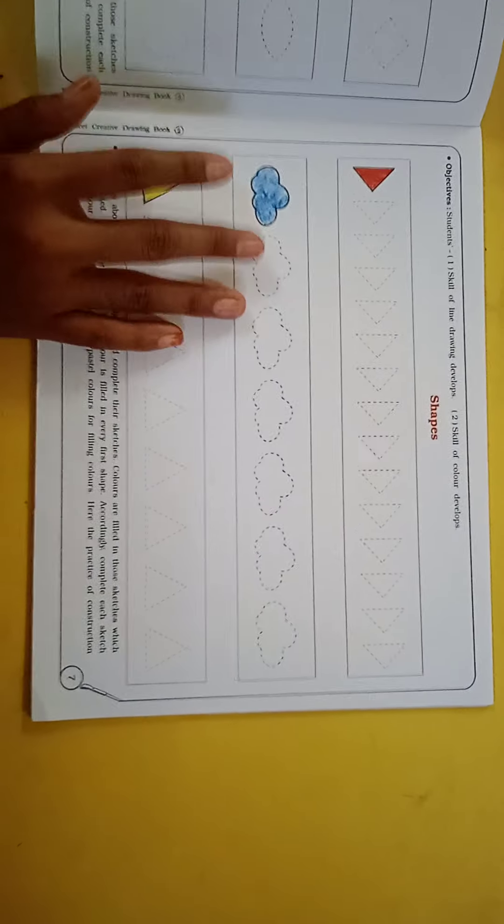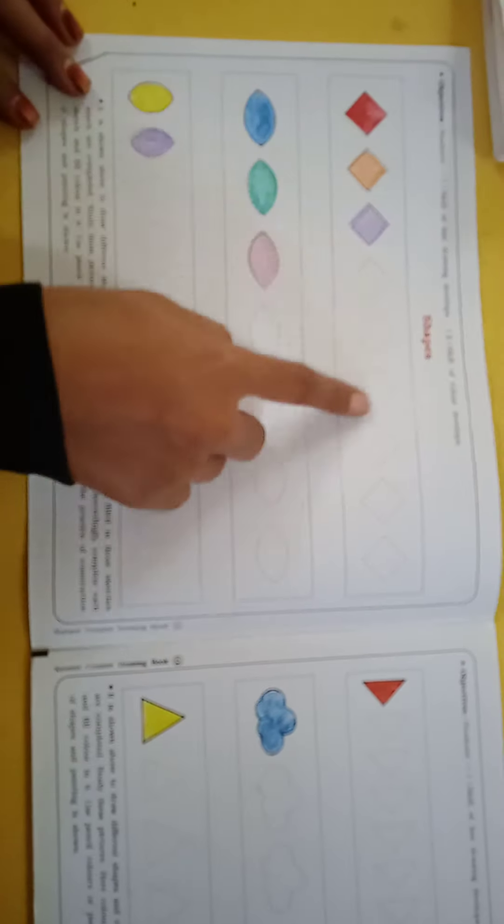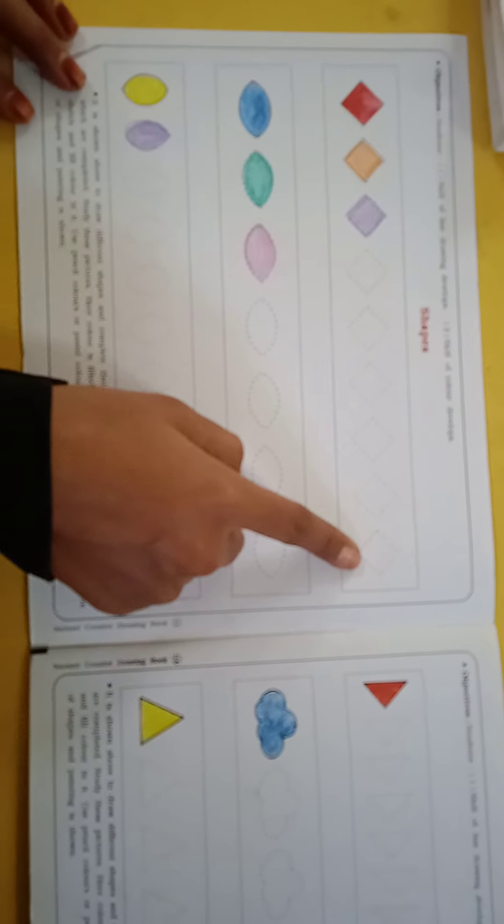What are we going to see? Shapes. This is our third chapter in which we will see the shapes. The teacher has given it here. What do you do? You have to join the dotted line and color it. You have to use different colors in the different boxes.